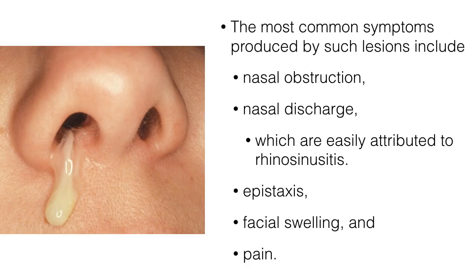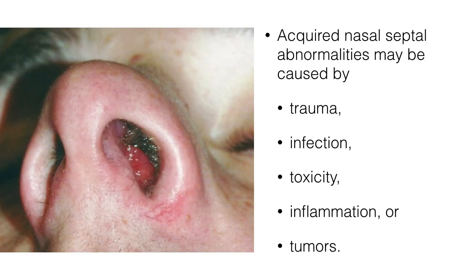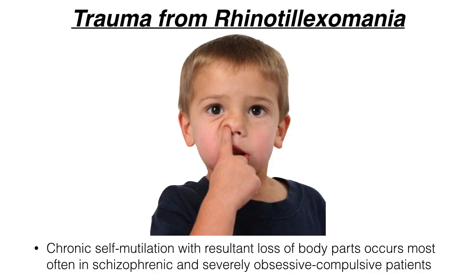The most common symptoms produced by septal lesions are nasal obstruction like this patient, nasal discharge like the picture on the left, which are easily attributed to rhinosinusitis, complications of sinusitis, common allergies, and things like that — as well as nosebleeds, facial swelling, and pain. Acquired nasal septal abnormalities may be caused by trauma, infection, toxicity, inflammation, or even tumors. Let's talk about some of them.